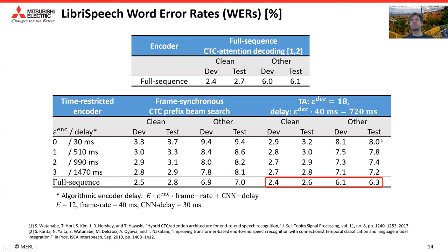If we want to have a fully streaming system, we need to use a time-restricted encoder as well. In this example, we're using one frame lookahead per layer. This corresponds roughly to half a second algorithmic delay. This triggered attention decoder would have an analysis delay of 720 milliseconds because it was using 18 frames lookahead. The overall delay in this example would be roughly 1.2 seconds. We would get for test other 7.8% error rate and for test clean, 3%.